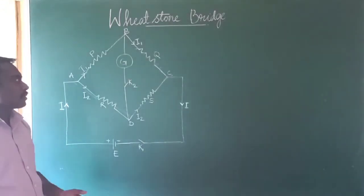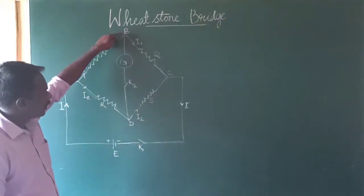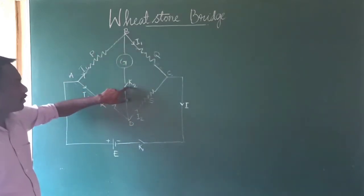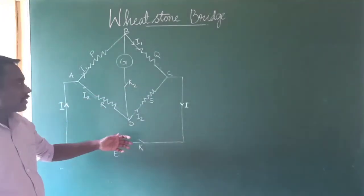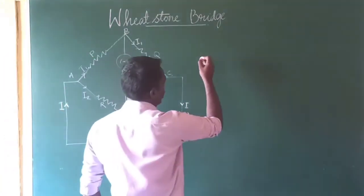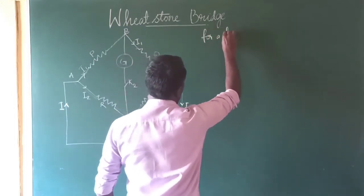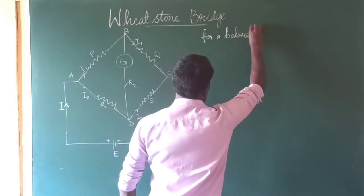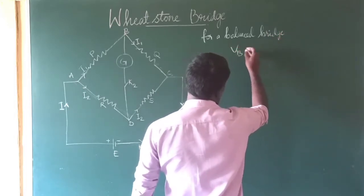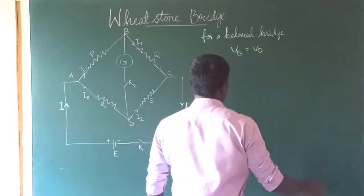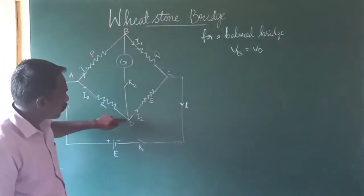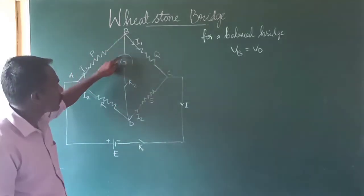In a balanced condition, the points B and D of this bridge have a galvanometer connected between them with the help of a key. At the balanced condition, the voltage at B is equal to the voltage at D. In the balancing condition, the voltages at both of these points are the same, which means there is no current flowing through the galvanometer.